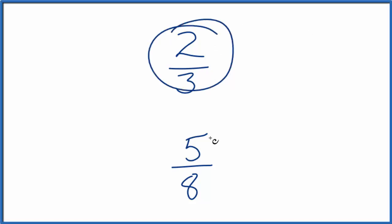Let's compare the fractions 2 thirds and 5 eighths and see which one is larger. So we're asking is 2 divided by 3 a bigger number than 5 divided by 8. There are two ways we can do this.